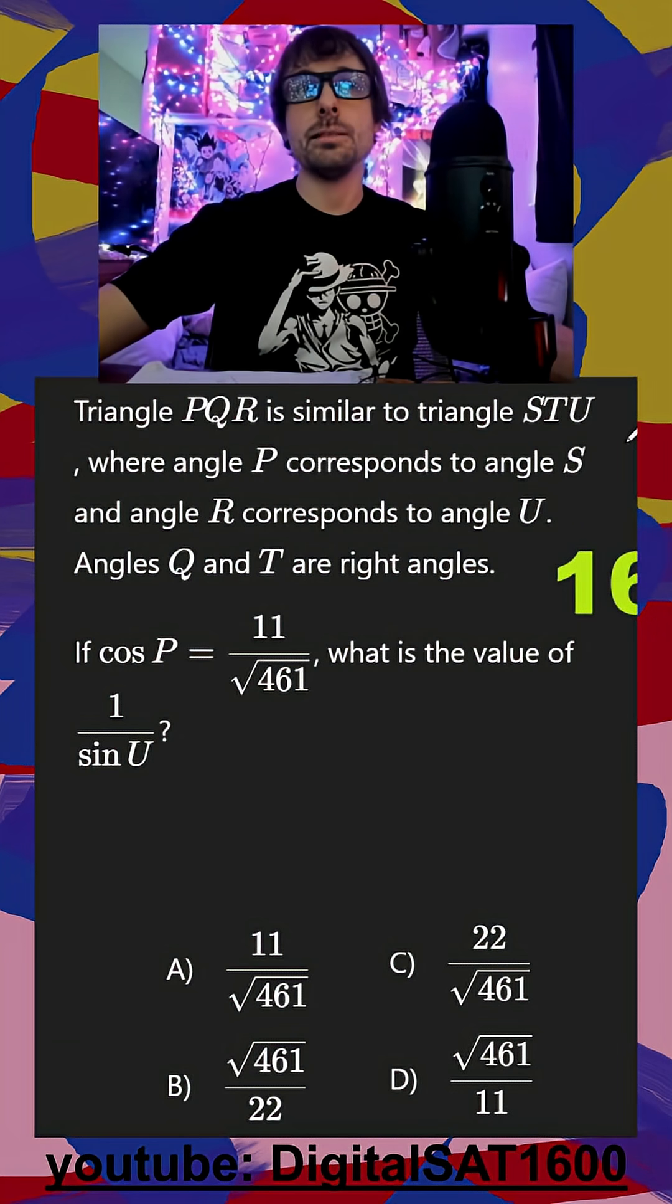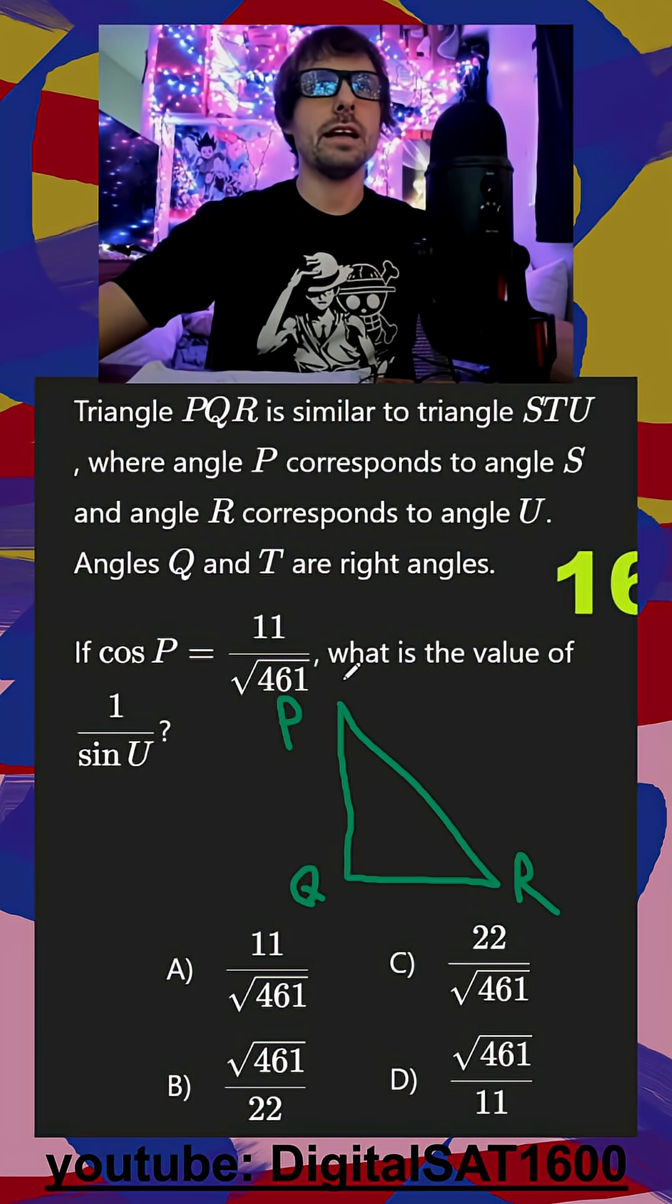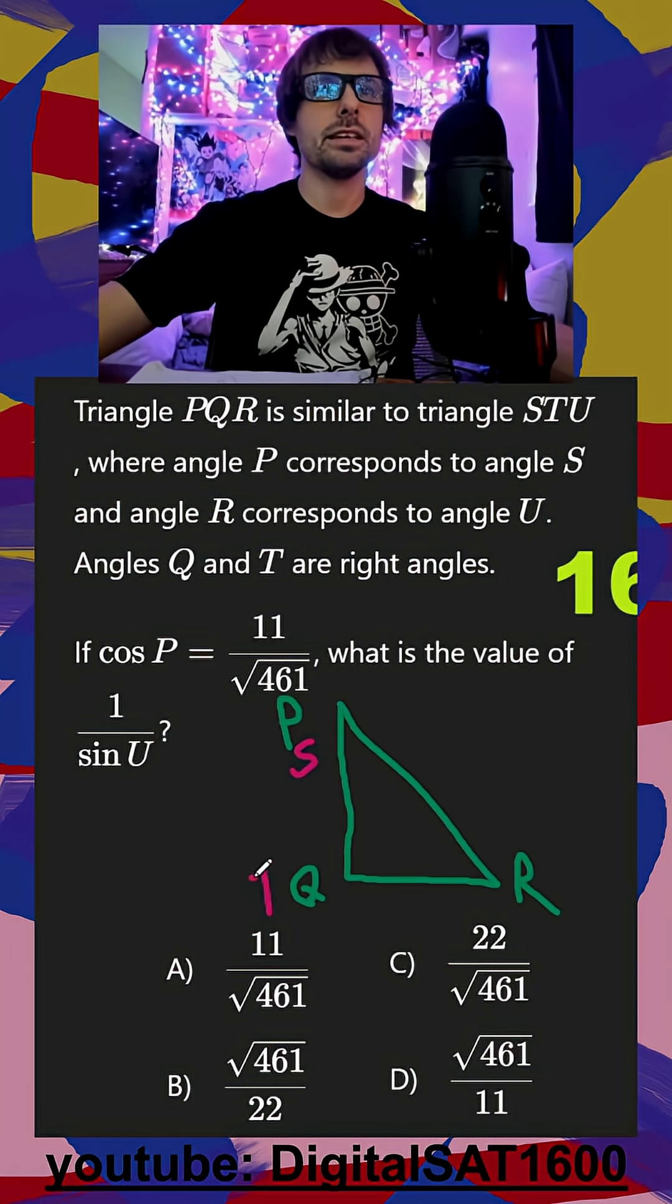Triangle PQR is similar to triangle STU. We only have to draw one triangle here. This is going to be P, Q, and R, and that's going to be corresponding to S, T, and U. They tell us that Q and T are the right angles.